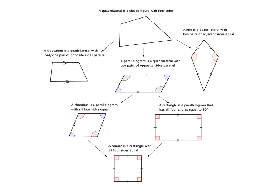Trapeziums are a bit tricky because in America they're called trapezoids, and some people have slightly different definitions. We're going to use the idea that a trapezium is a quadrilateral with only one pair of opposite sides parallel. Because of this, it doesn't have any special properties of equal sides or equal angles. The only thing we can do is use our parallel line theorems — alternate angles, co-interior angles, etc. — to help when working with trapeziums.